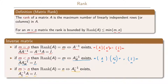Here we have matrix A with m rows and n columns. If the rank equals n, we have a left inverse, which is a rectangular matrix with n rows and m columns. When we multiply these two matrices, we get the identity matrix with n rows and n columns.